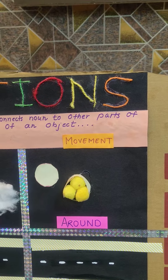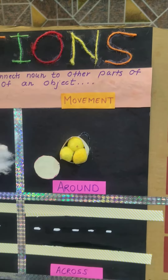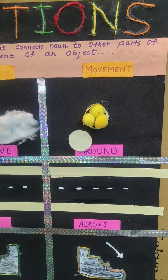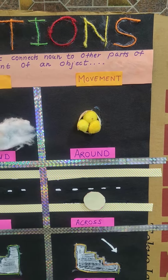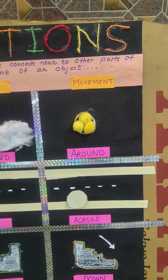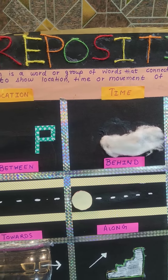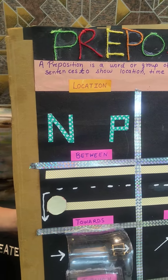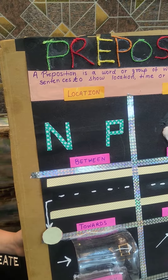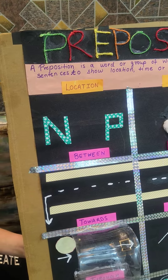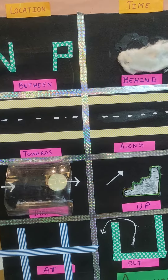He came back again to the earth and crossed the road, so across is the preposition. Then he moved along the road, making along a preposition. And then he moved towards the road, making towards a preposition. Then he saw a tunnel and crossed through it.